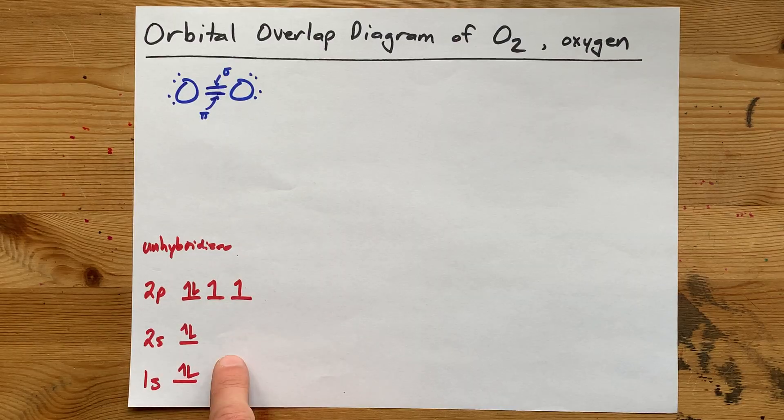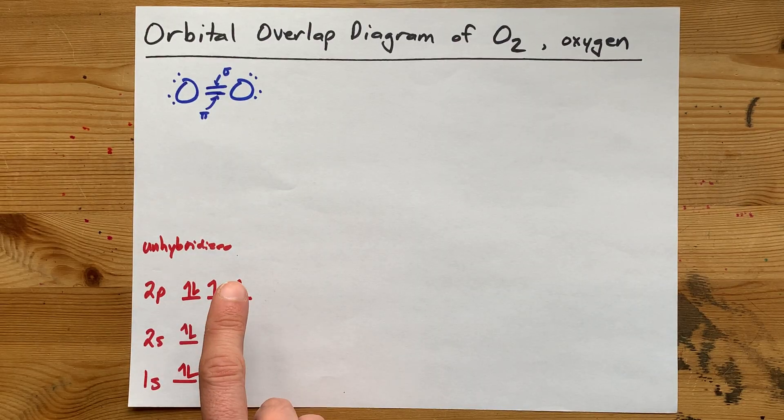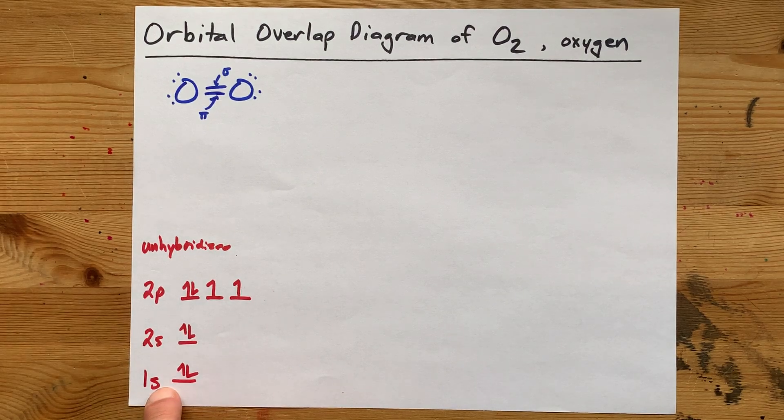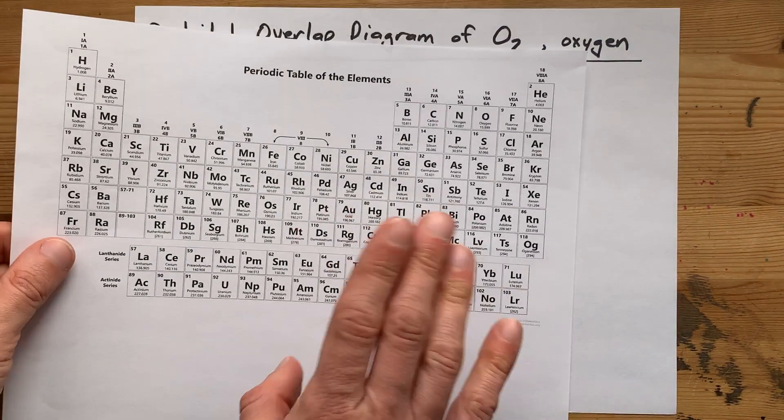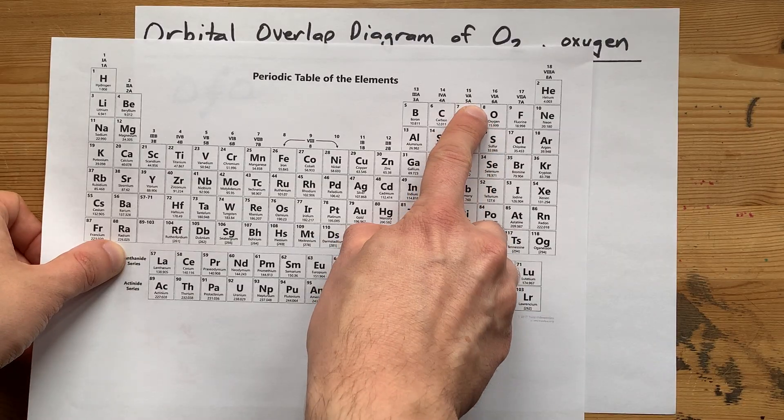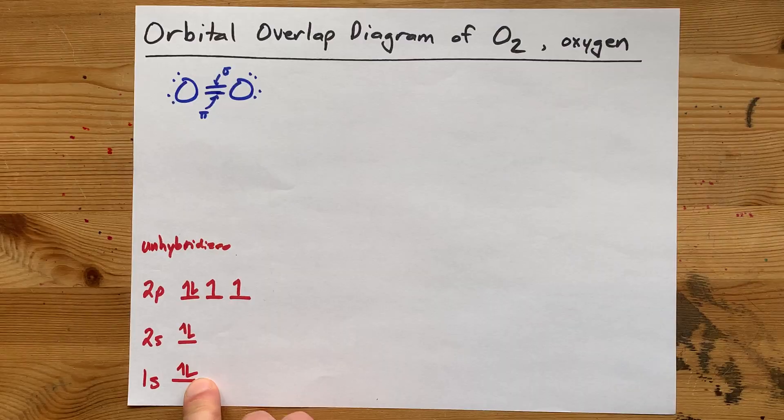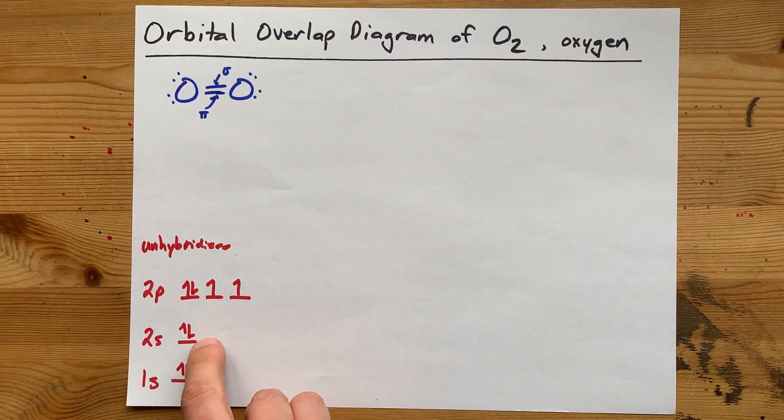This is the electron configuration diagram for unhybridized oxygen. I'm showing the first shell here just to emphasize that it's not involved. Oxygen has 8 electrons total, 2 in the first shell, 6 in the second shell.